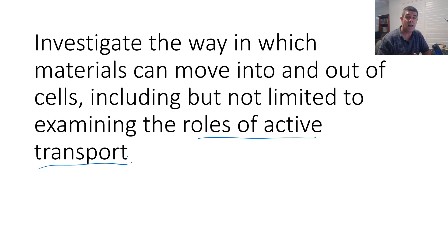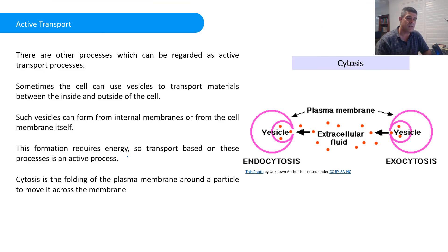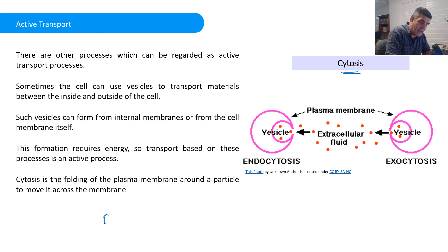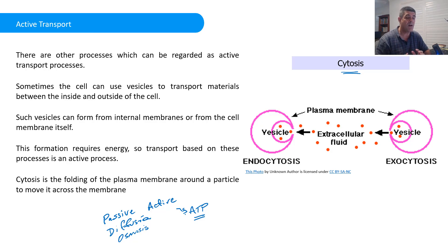Remember, we're looking at the role of active transport — how it is that we can move material or particles that are required by cells, or not required by cells, against the concentration gradient. To recap quickly, we've looked at both passive and active transport processes. Passive transport processes include things like diffusion and osmosis, and active transport processes, like our sodium-potassium pump, require the addition of energy, usually in the form of ATP molecules.